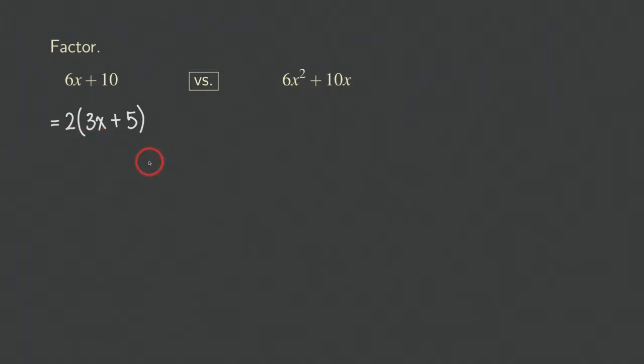We factored out the greatest common factor, 2. Now let's look at this one. This one is almost the same thing. We already know that we can factor out the 2 from both the 6 and the 10. But when we look at the x squared and this x, we actually realize that we can factor out an x from both the x squared and the x.